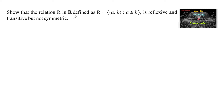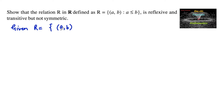Show that the relation R in the set of real numbers, defined as R = {(a, b) : a ≤ b}, is reflexive and transitive but not symmetric. Given relation R = {(a, b) : a ≤ b} defined over real numbers.